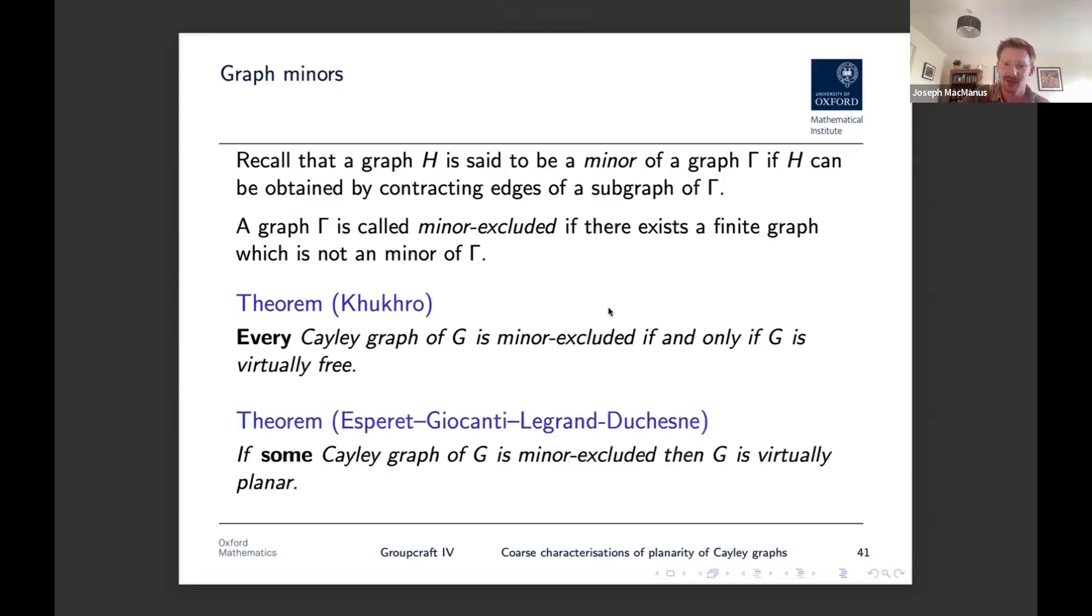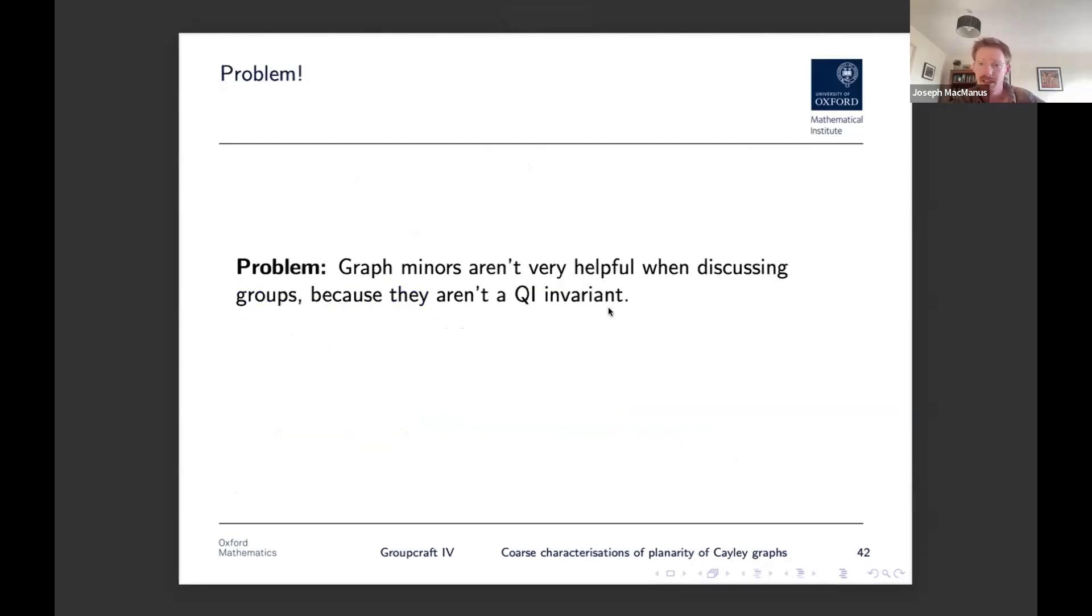And on the other end of the quantifier spectrum, there is a recent paper of Esperet-Giocanti and Le Grand du Chesnay, which can be used to show that if some Cayley graph of your group is minor excluded, then it turns out that your group is virtually planar. So say you draw your Cayley graph and you realize that there's no, I don't know, there's no clique of size one million or something like that, or no complete minor size one million. It turns out your group is virtually planar. And so its structure is quite restricted. The converse of this theorem is not true. So Z squared times Z two is a counterexample. Right. But the problem with trying to do any more than this is that graph minors aren't a QI invariant.